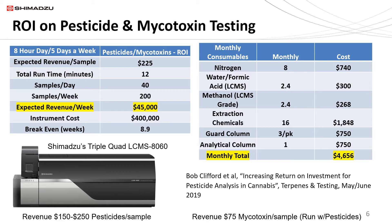Pesticides are generally analyzed by LC-MS-MS using electrospray ionization, or ESI. However, atmospheric pressure chemical ionization, or APCI, may be required depending on the regulations being followed. In some cases, APCI has replaced traditional GC-MS-MS methods. Since GC-MS-MS may be more sensitive for a few select compounds, consult your manufacturer about specific requirements.